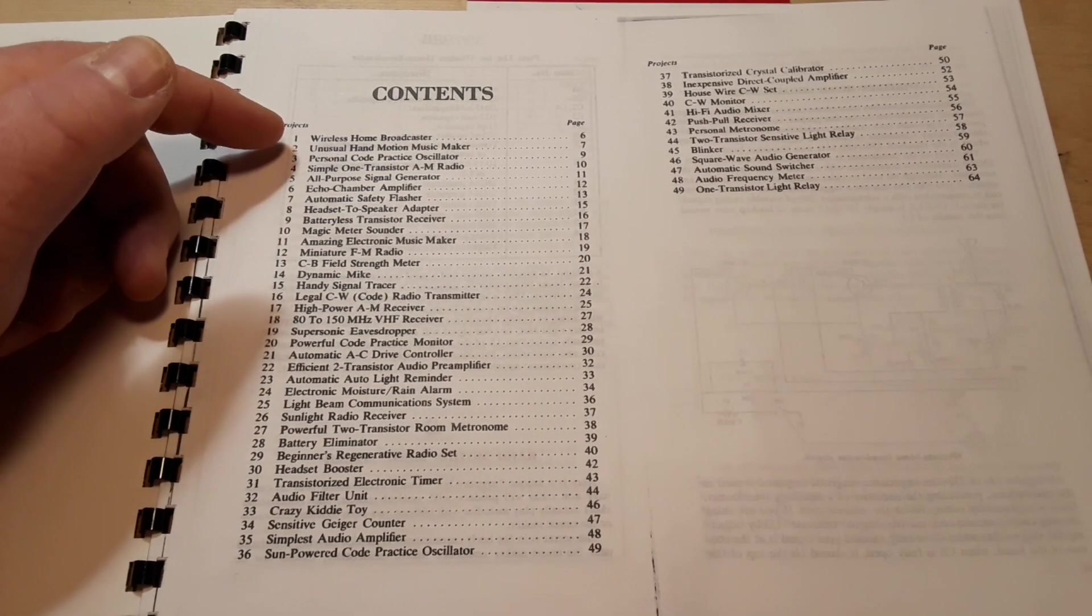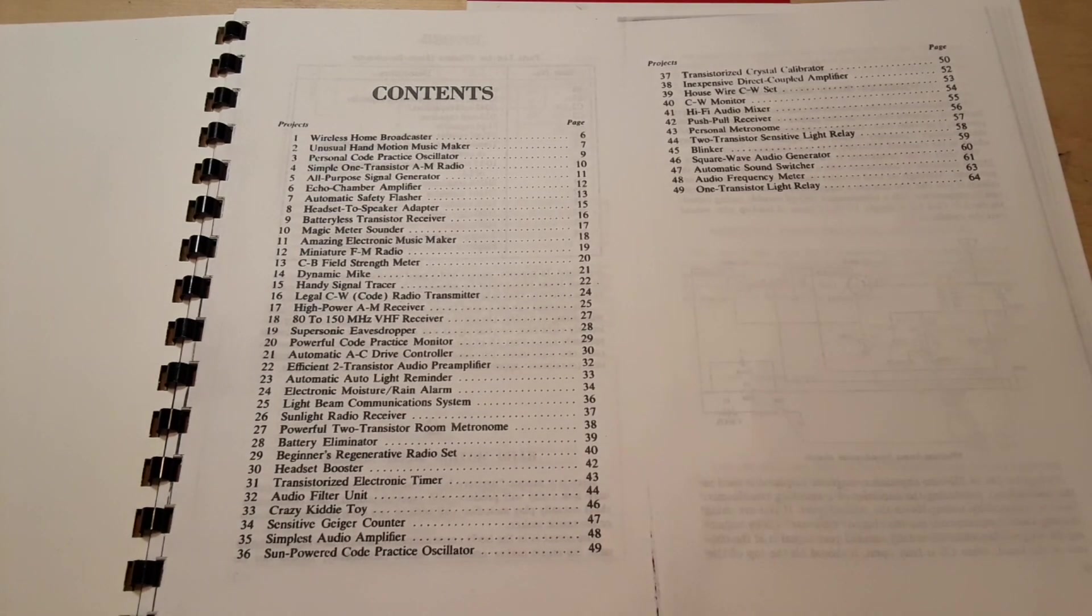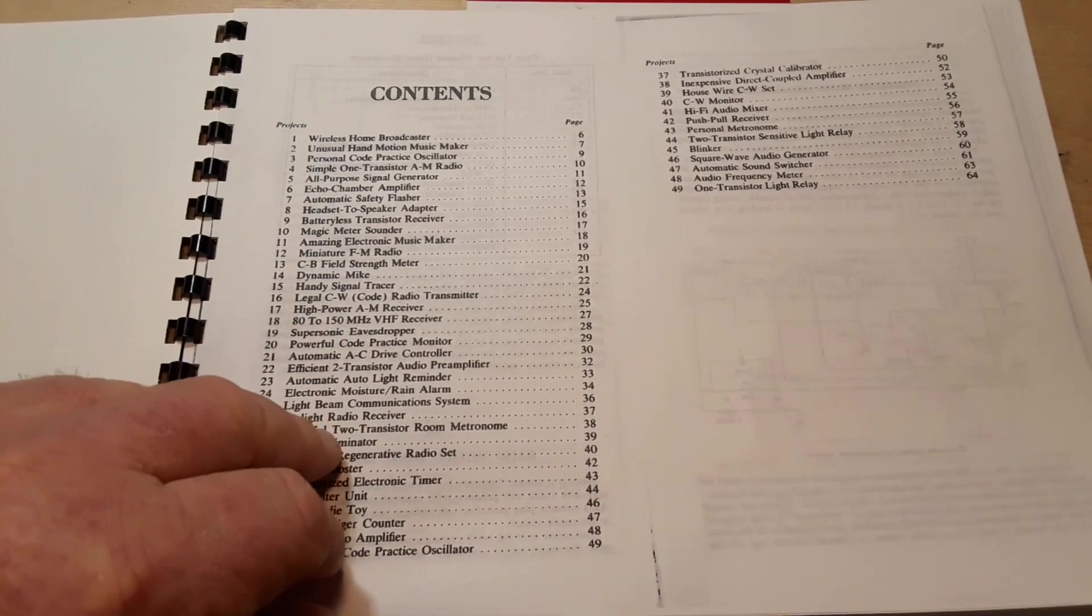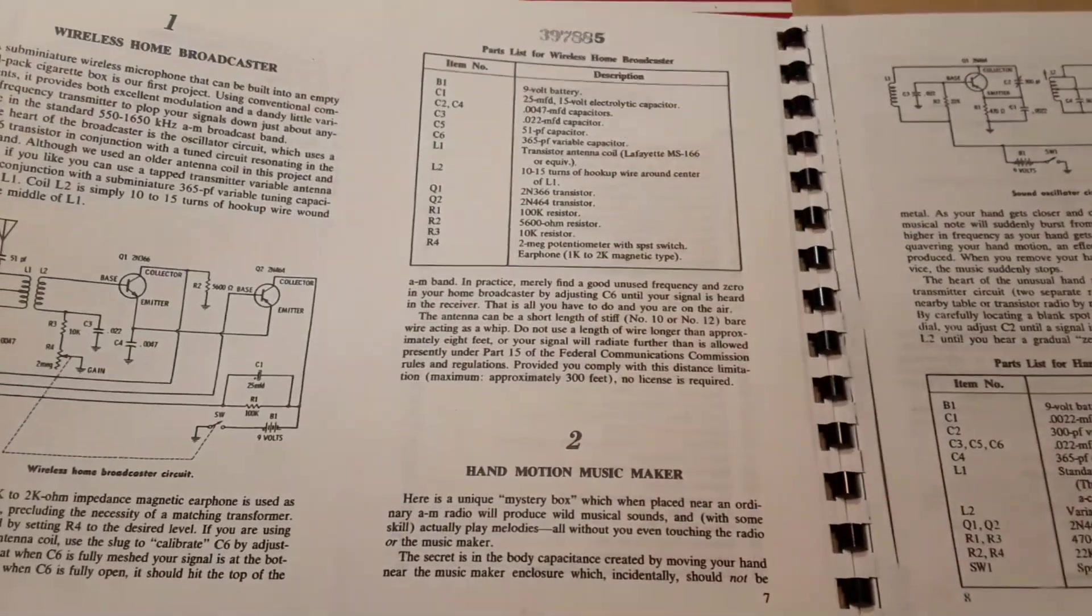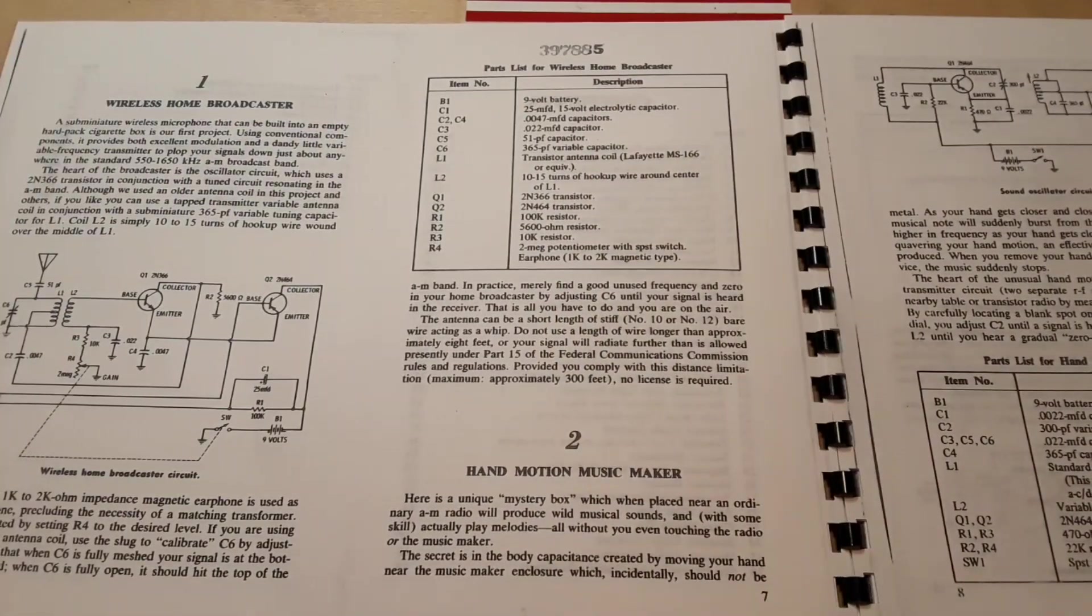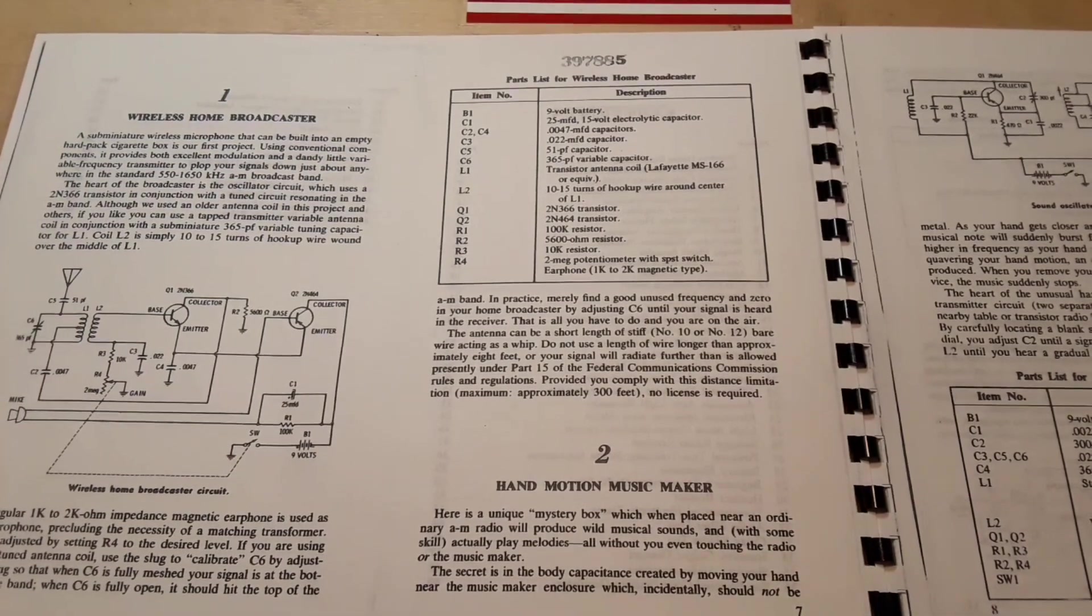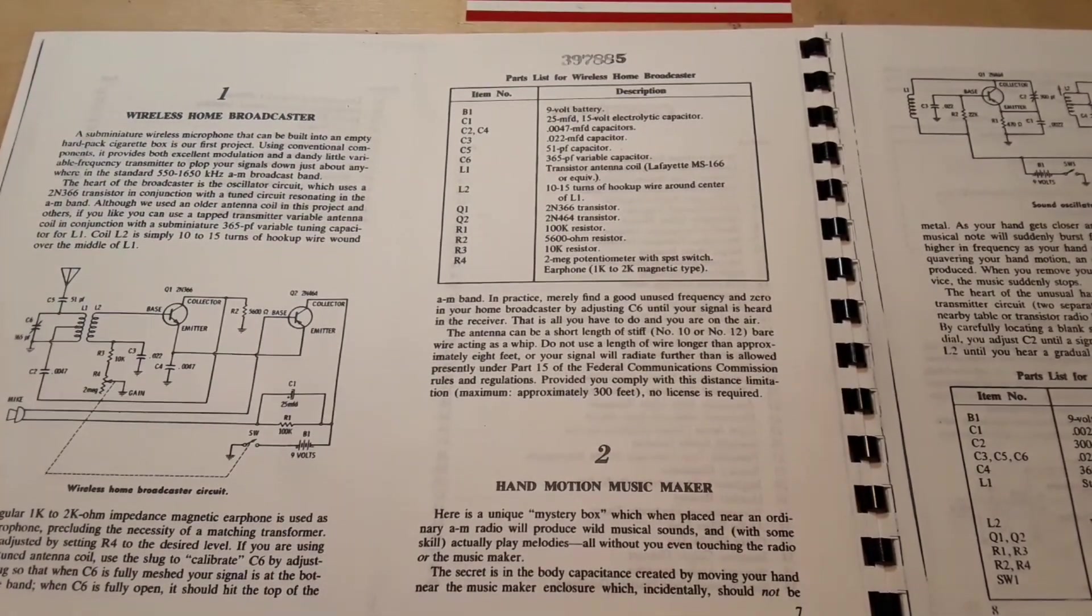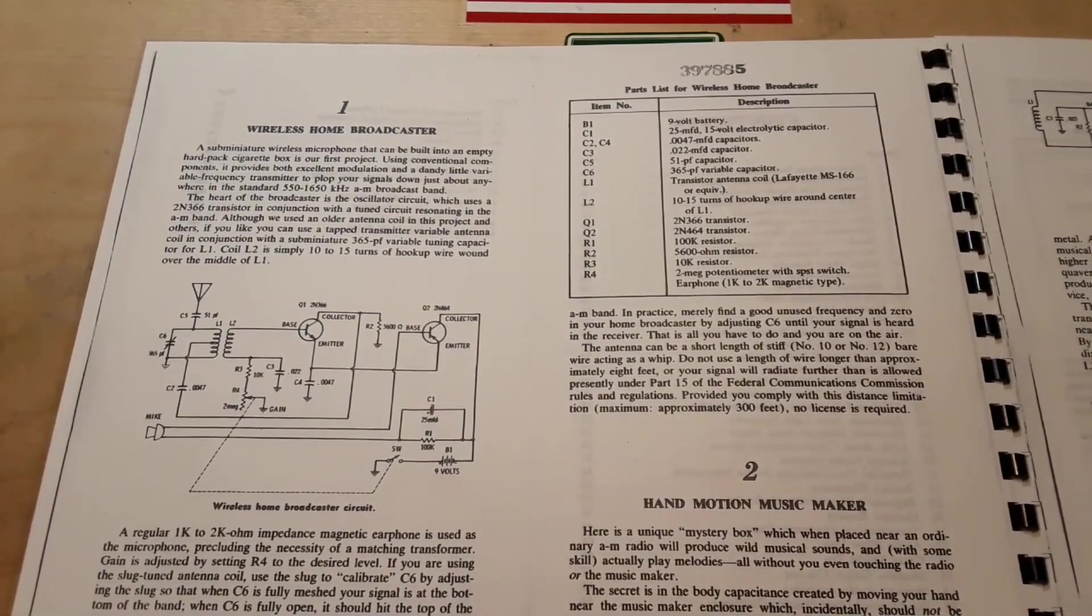So we have wireless home broadcaster, unusual hand motion, just a ton of interesting little transistor circuits. A sub-miniature microphone that can be built into an empty hard-packed cigarette box. There were a lot of them around when I was a kid. My dad smoked Salem's and a pipe.